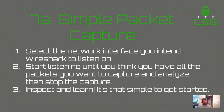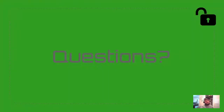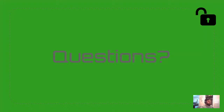This is the three-step process we're going to do for the demo: first, select the network interface we intend to listen on from Wireshark. Second, start listening until we have all the packets we want to capture and analyze. Third, stop the capture and inspect and learn about the packets we received. For Linux folks: sudo apt install wireshark, something along those lines, and it comes out of the box. The TCP three-way handshake — confirmed by chat — is SYN, SYN-ACK, ACK.